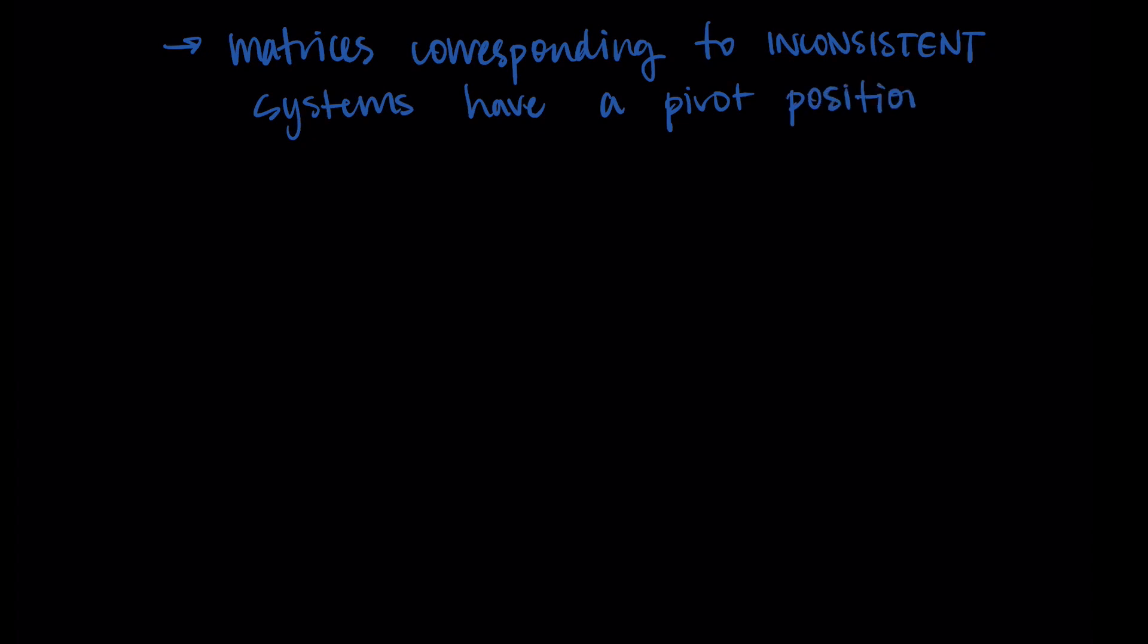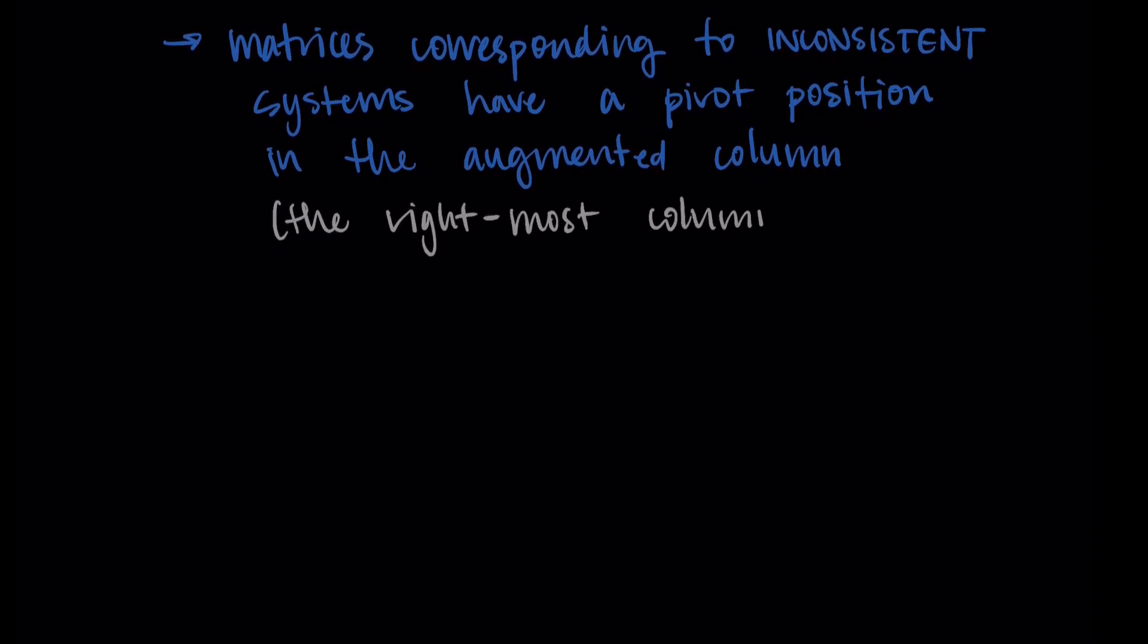Then we can make some conclusions that relate to the pivot positions in terms of our consistent and inconsistent systems. First, matrices that correspond to inconsistent systems will have a pivot position in the augmented column, which is the rightmost column. We saw this in one of our examples, but let's write it out here. If we have our matrix and we're going across the rows and we have our pivots,